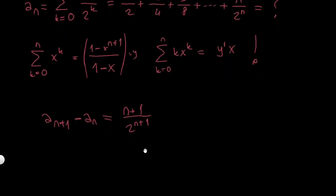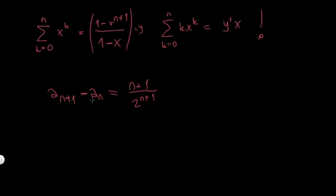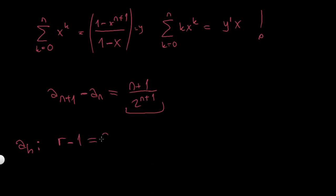Now I want to solve this linear recurrence relation. I already know how, except the particular solution may be a bit tricky — but it's not. To solve the homogeneous equation (right-hand side equal to 0), I consider the characteristic polynomial: r minus 1 equals 0, so r equals 1. My homogeneous solution is then a times r to the n, which is just the constant a.